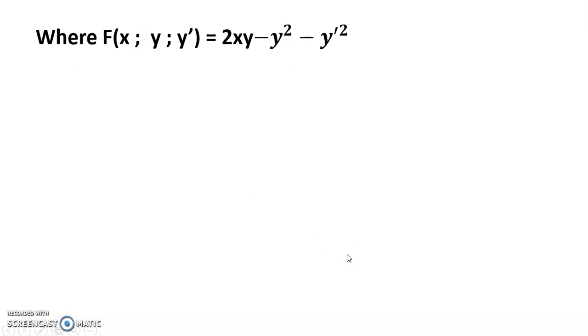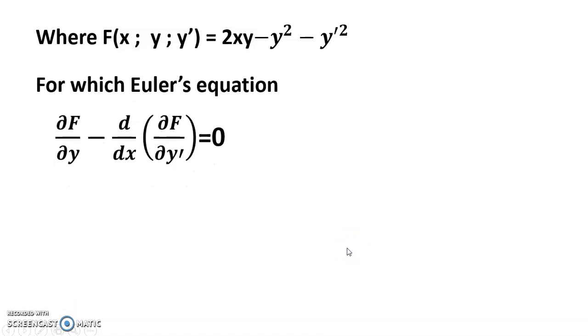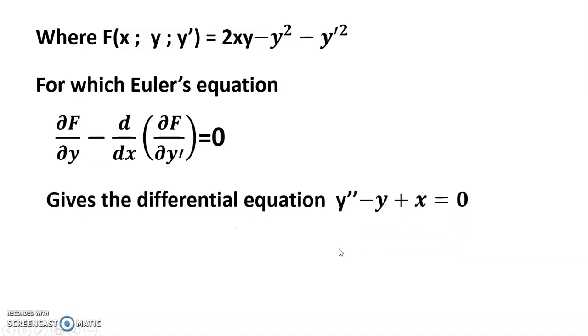And F(x, y, y dash) is equal to 2xy minus y square minus y dash whole square, for which Euler's equation del F by del y minus d/dx into del F by del y dash equals to zero gives the differential equation y double dash minus y plus x equals to zero. Assume that the trial function is...